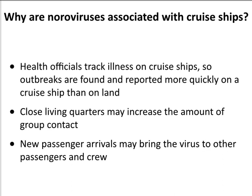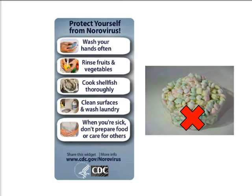Cruise ships are not the happiest places on Earth. The CDC keeps a careful record of cruise ship outbreaks because it's a closed, monitorable situation. New passenger arrivals may bring virus, ships are cleaned between voyages but you can never eliminate everything. To prevent norovirus infection: wash your hands often, rinse fruit and vegetables well, cook your shellfish, clean your surfaces, and if you are sick don't prepare food for others. Also, studies have shown that the mints in restaurant bowls near the door are totally contaminated, so don't pick them up.